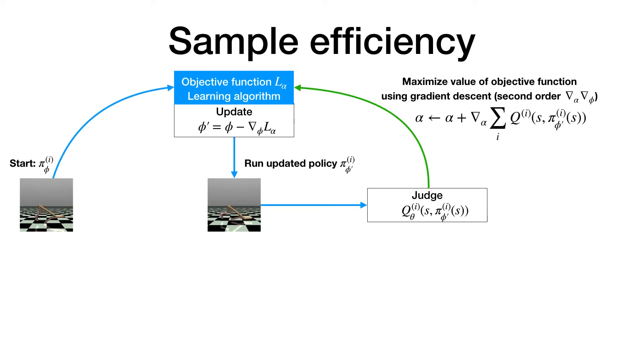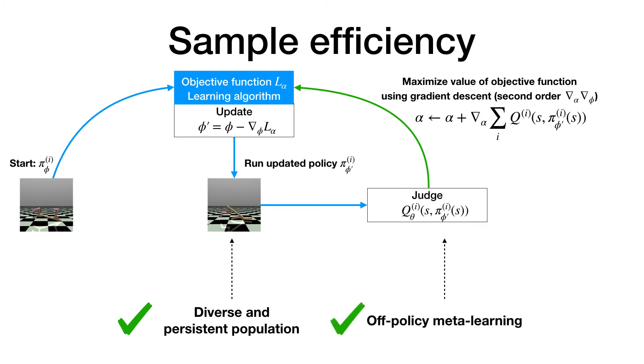Because of this formulation, we don't have to discard the policies after each meta-learning step. Instead, we maintain a diverse and changing population of policies and make few updates to each agent for a single meta-update. Further, by using q values, we can increase the meta-learning sample efficiency through off-policy data.